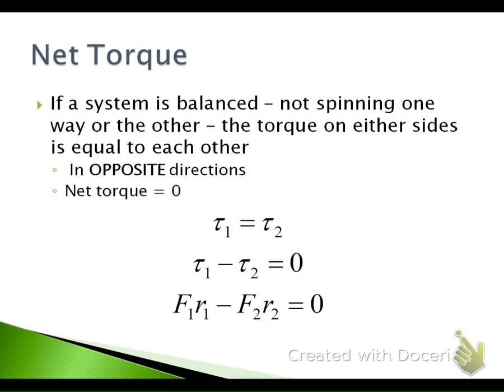For these balanced net torque systems, we rarely need the sine theta, so it's left out. The most common form of this equation is: F₁ × R₁ = F₂ × R₂. All of these forms mean exactly the same thing.